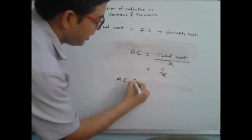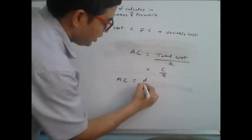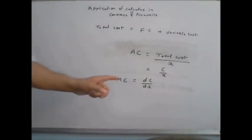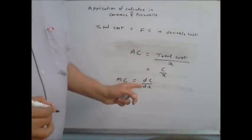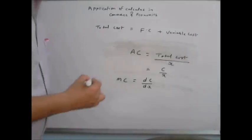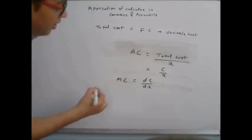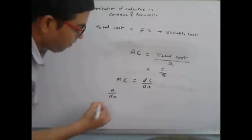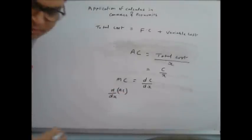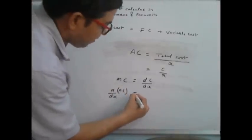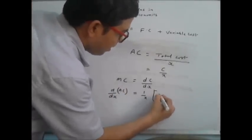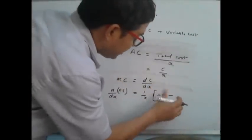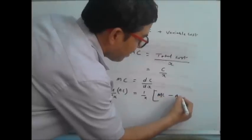Marginal cost is the rate of change of cost with respect to x — that is dC/dx gives you the marginal cost. There is a relation between average cost and marginal cost: the derivative of average cost is equal to 1/x times (marginal cost minus average cost).